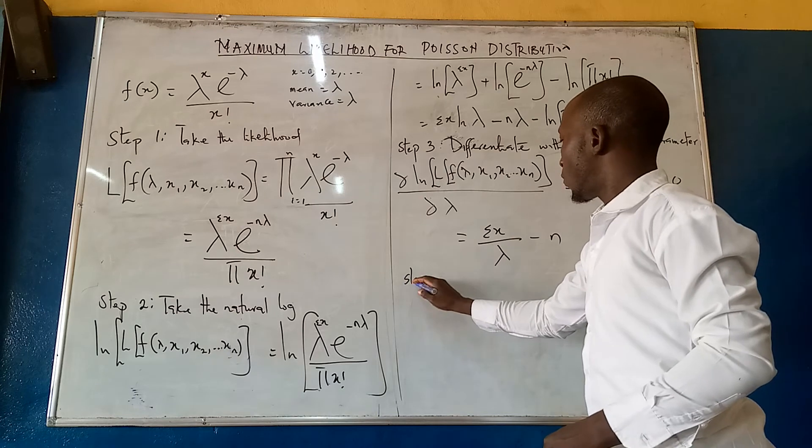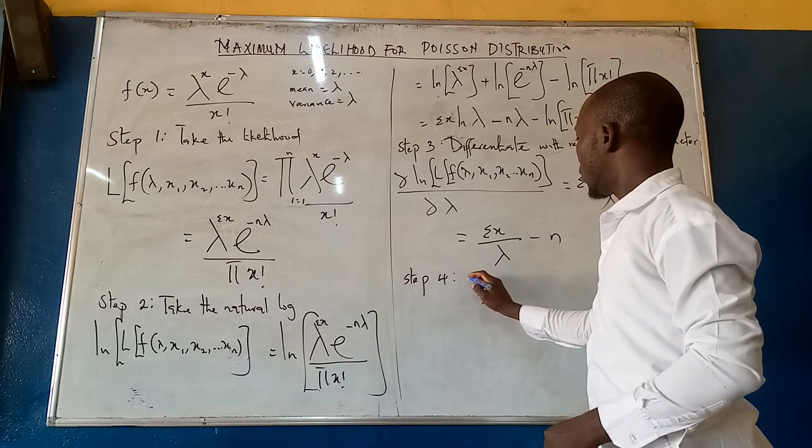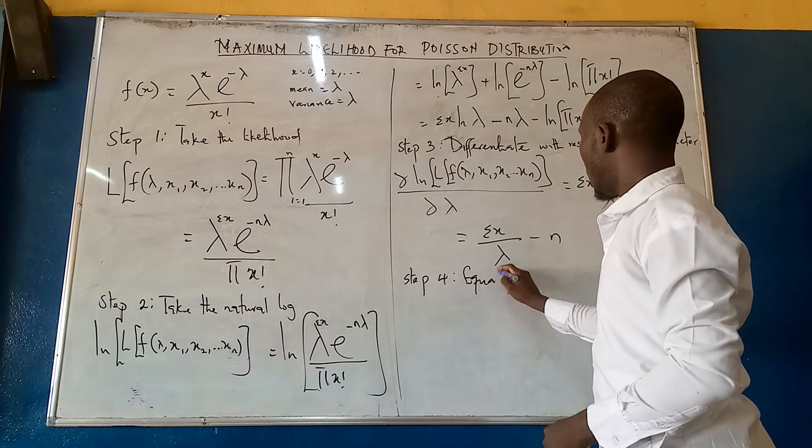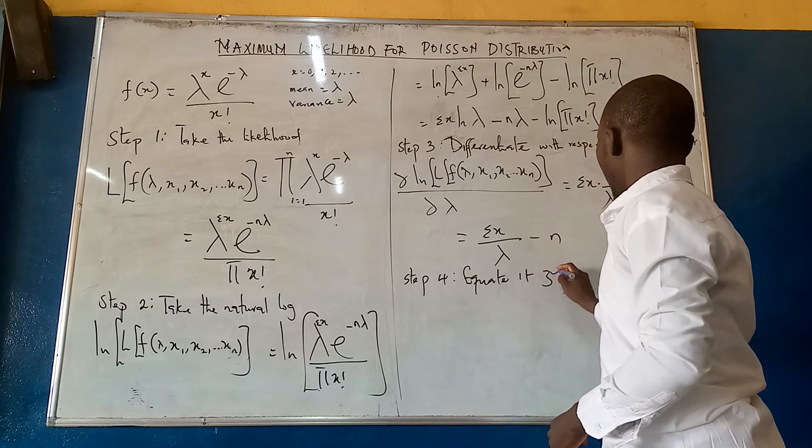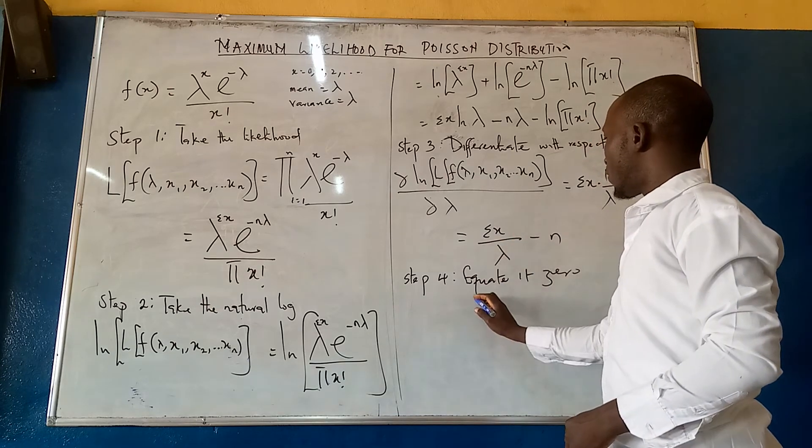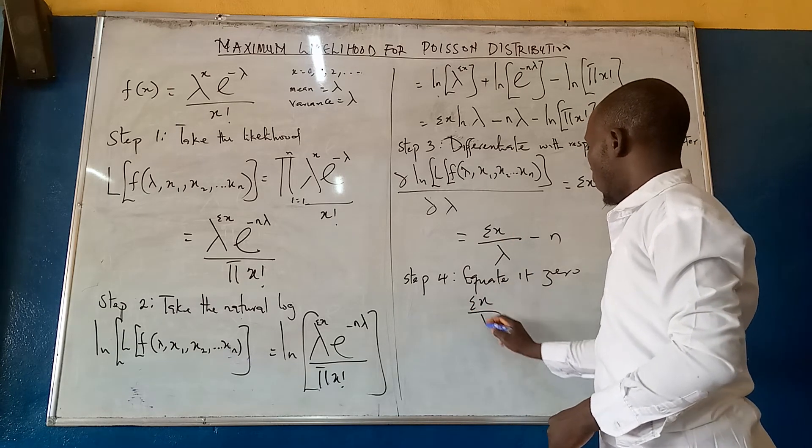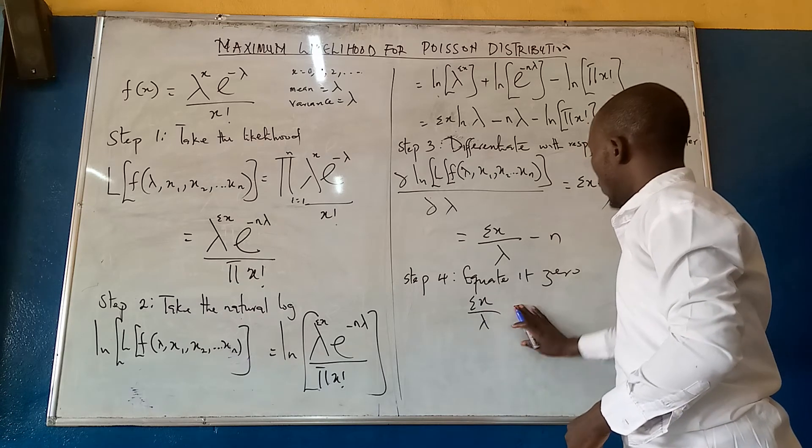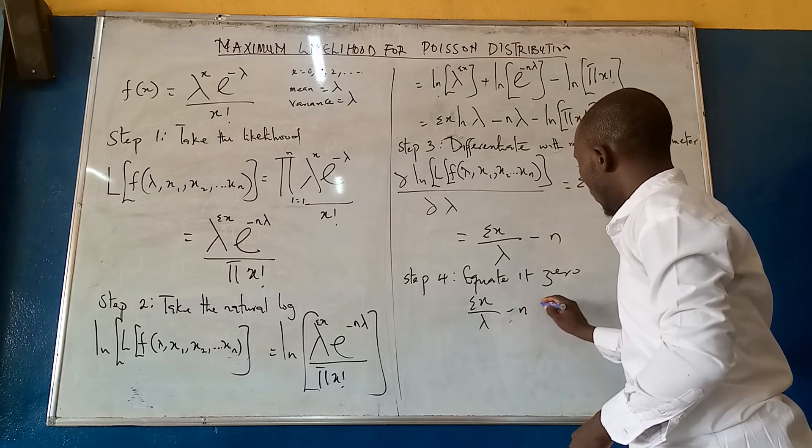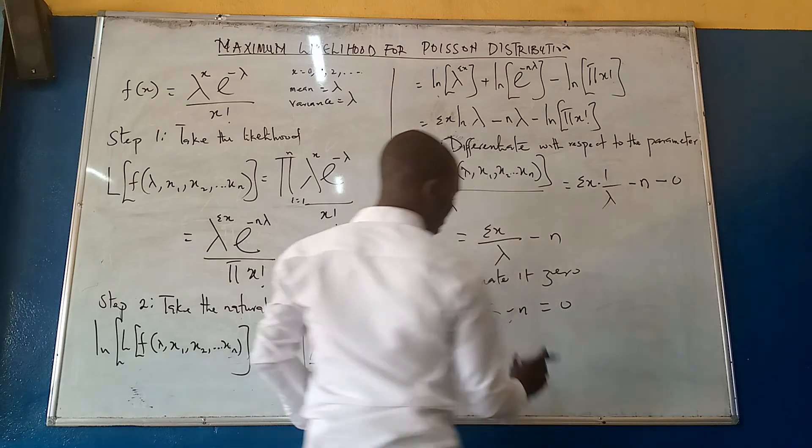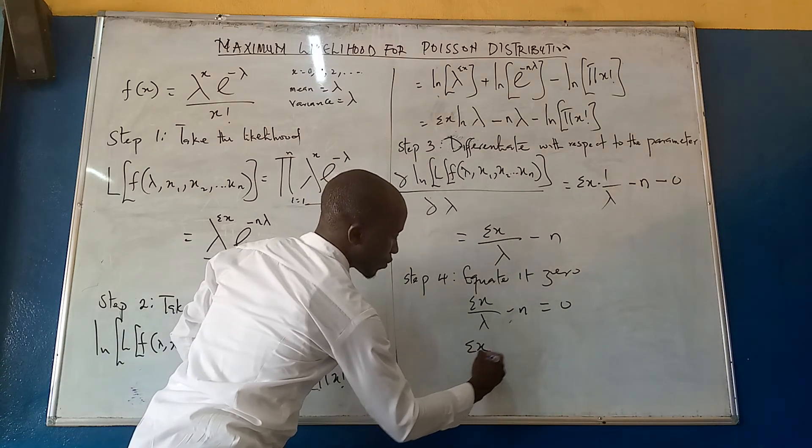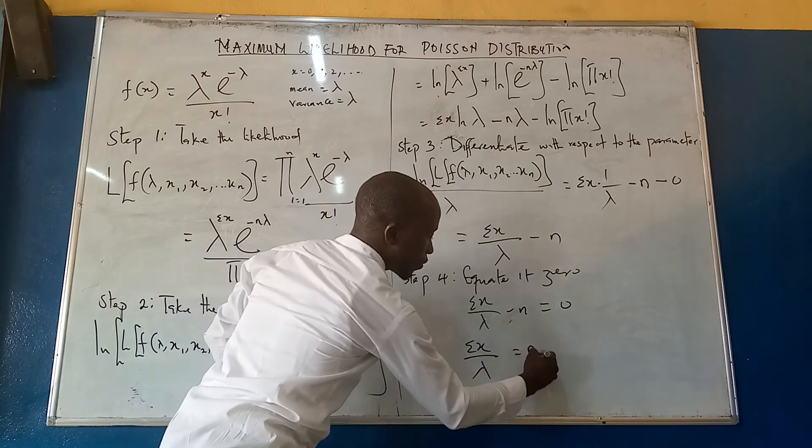Now step 4, equate it to 0. So here we are going to have summation x over lambda, minus n, equals to 0. And this will give us summation x over lambda equals to n.